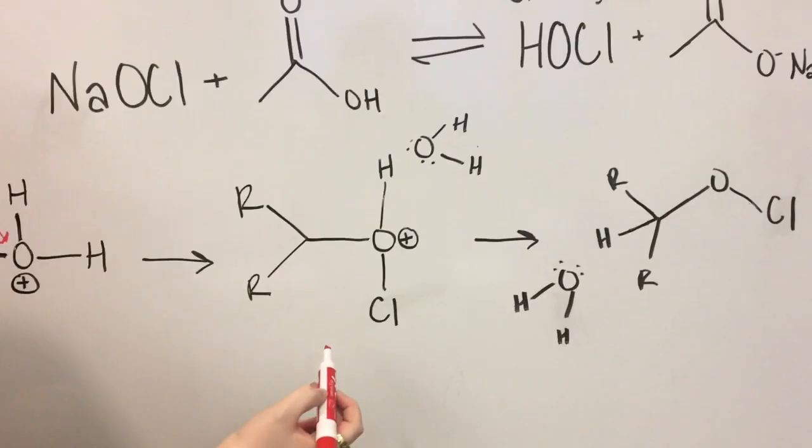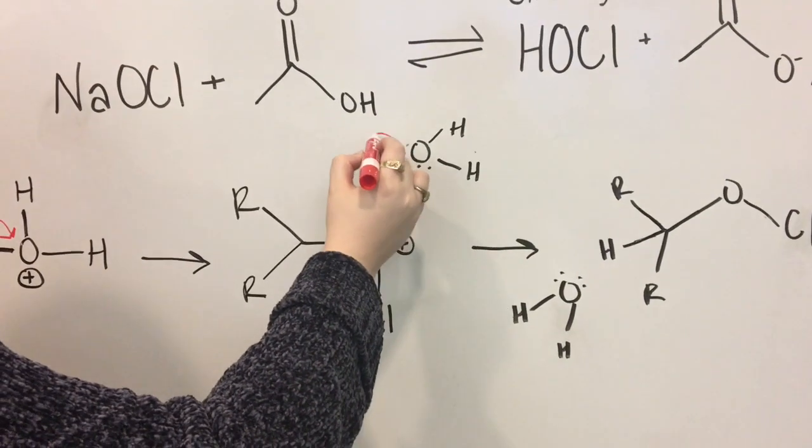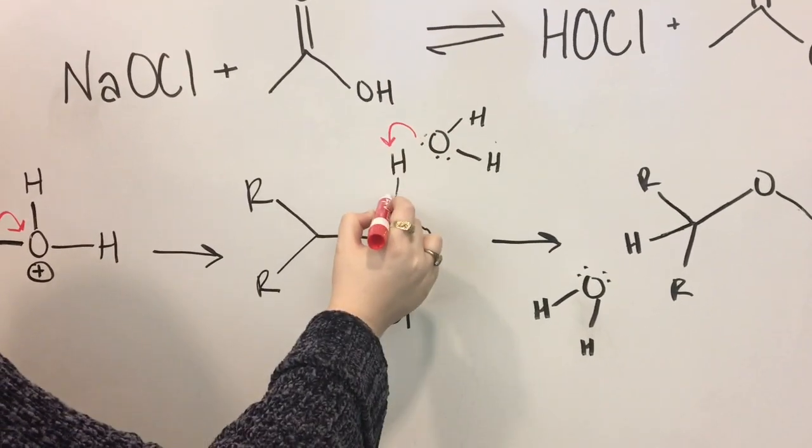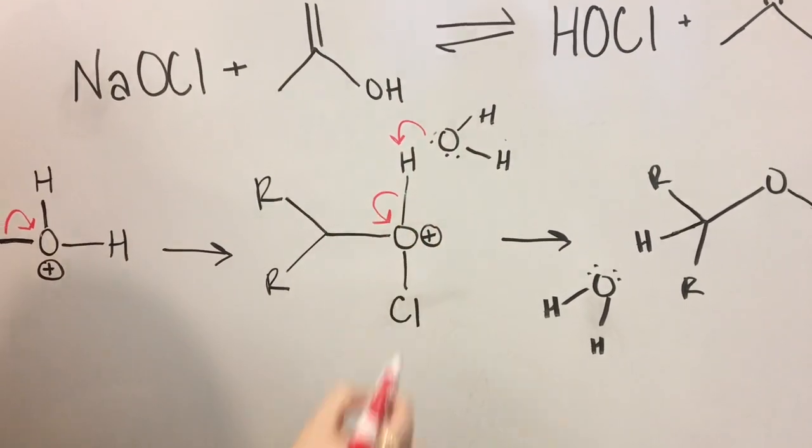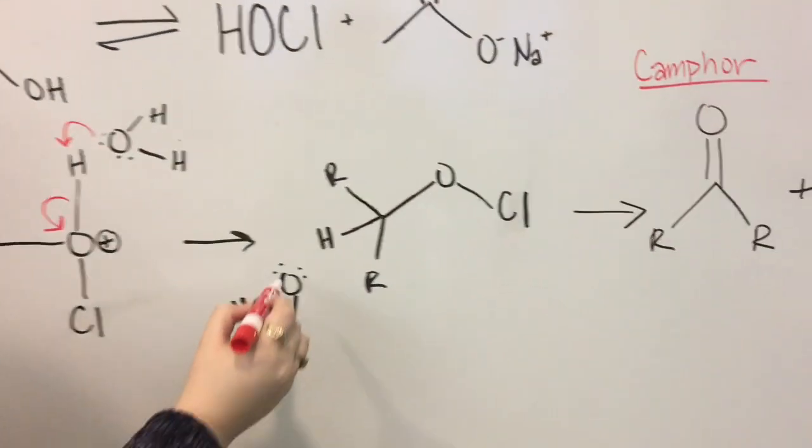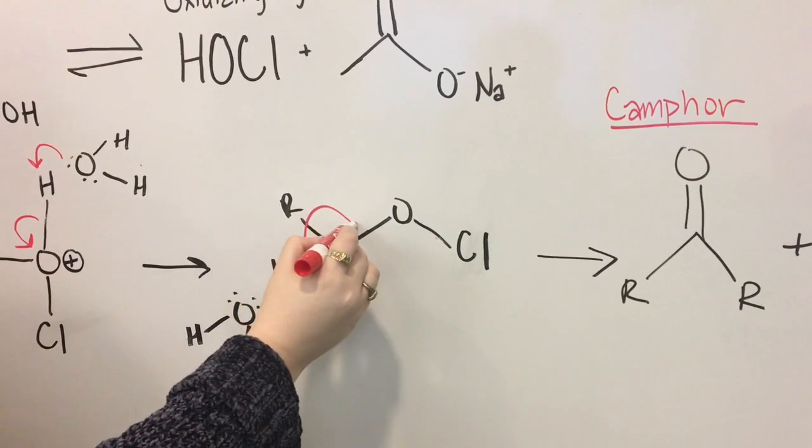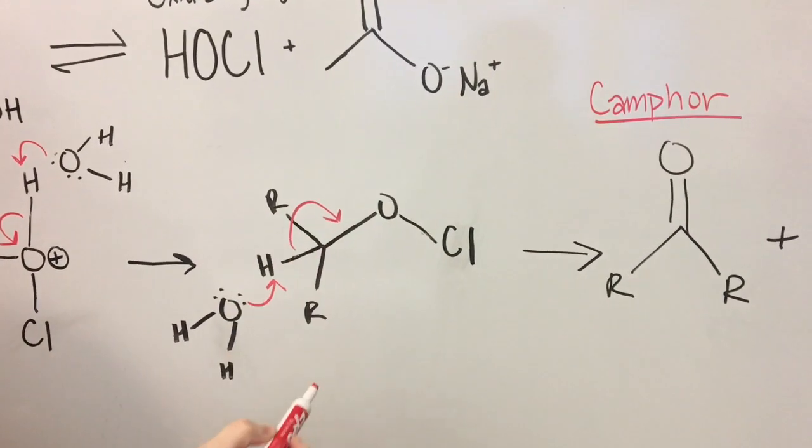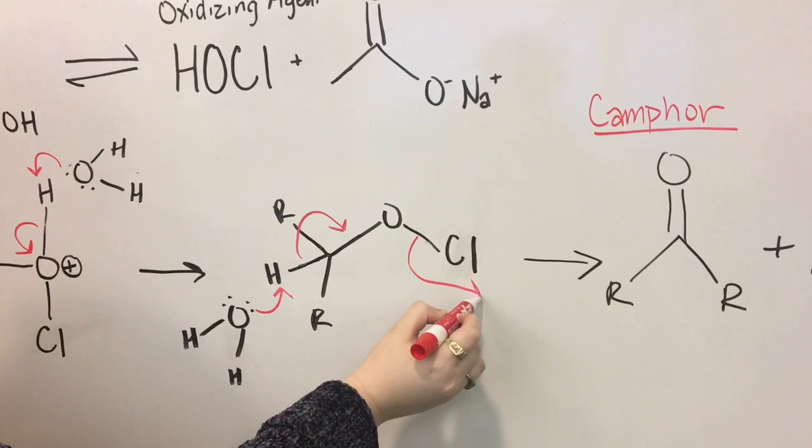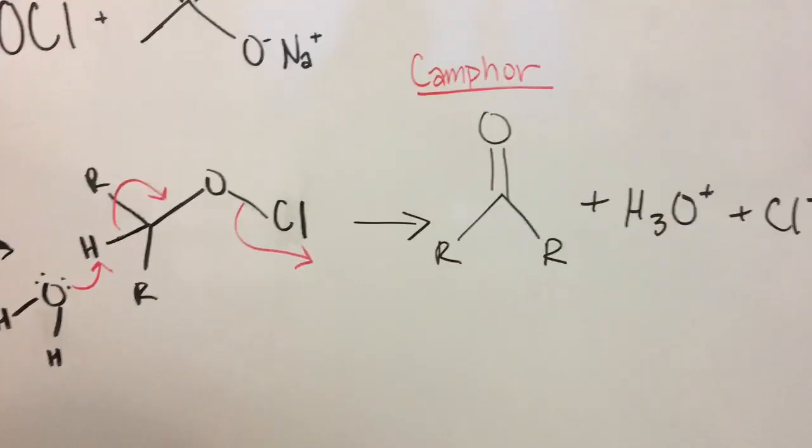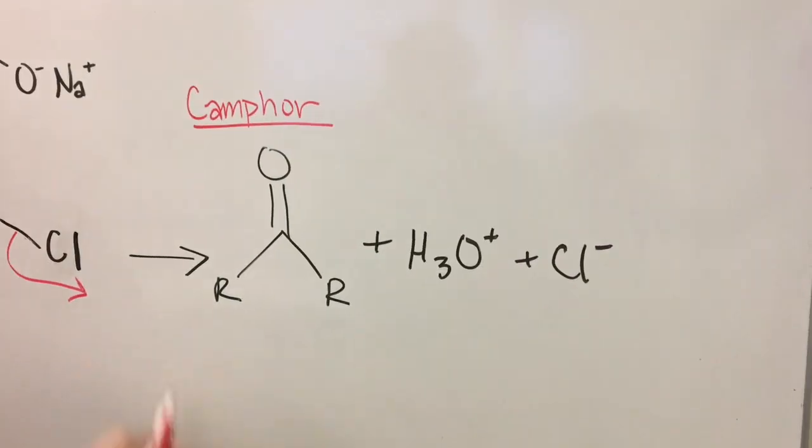Then, H2O deprotonates oxygen bonded to chloride on the ring structure. H2O then deprotonates carbon of the ring structure adjacent to oxygen. The chloride-oxygen bond breaks heterolytically, and electrons from the hydrogen elimination form the carbonyl group on camphor.